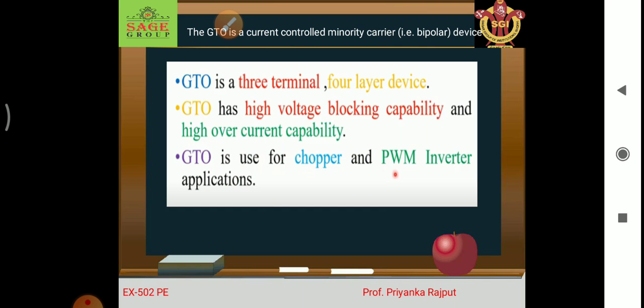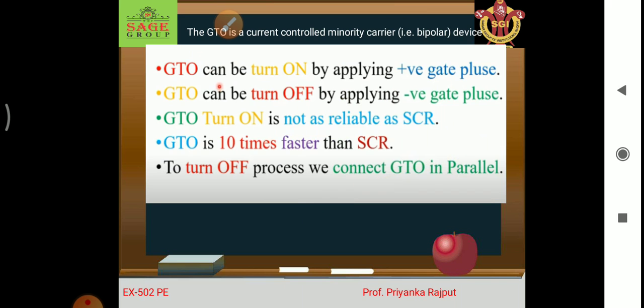The GTO is a 3-terminal and 4-layer device. It has high voltage blocking capability and high current capability. GTO is used for chopper and PWM inverter applications. It is turned on by applying a positive gate pulse and turned off by applying a negative gate pulse — when we connect the gate terminal to a positive supply it turns on, and when we apply a negative gate pulse it turns off.